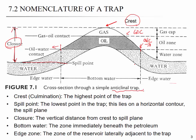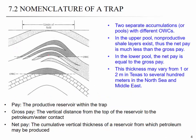Beneath the oil and water contact, you don't have any oil. We've already seen the pay — the productive reservoir interval within the trap — gross pay and net pay. Here we have two separate accumulations with different OWC. In the upper zone, net pay is less than gross pay, and it's the same in the lower zone. This thickness may vary from one or two meters in Texas to several hundred meters in the North Sea and the Middle East.